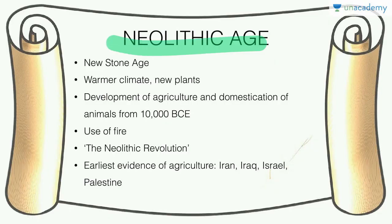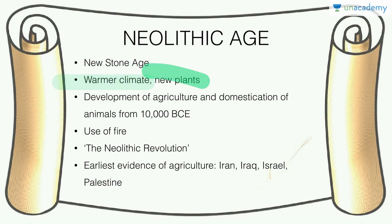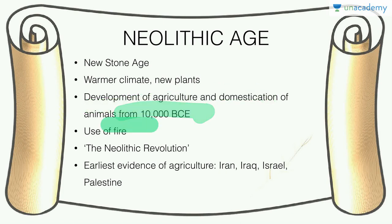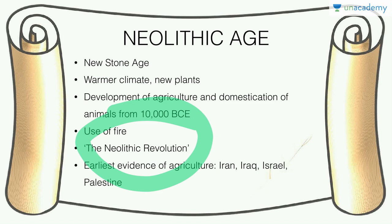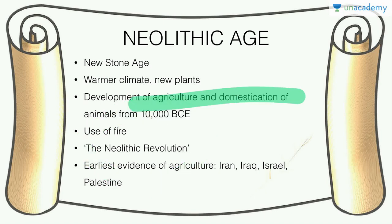The Neolithic, or new Stone Age, had a substantially warmer climate and new plants, leading to the proper development of agriculture and domestication from 10,000 BC. We also see the use of fire. This development is called the Neolithic revolution, though there is a historiographic debate on whether it qualifies as a revolution since agricultural development took thousands of years — not the rapid change usually associated with revolution.